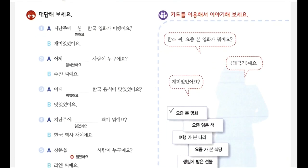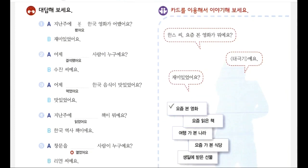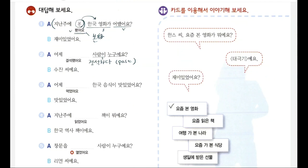엑서사이즈 갑시다. 1번: 지난주에 본 한국 영화가 어땠어요? How was the Korean movie you saw last week? Past tense: base form 보다 → 받침 없어요, insert 니은 → 본. 2번: 어제 결석한 사람이 누구예요? Base form 결석하다 → past modifier 결석한. Who was absent yesterday? 수잔씨예요.